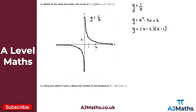If I sketch this quadratic, it's going to look like a standard upward-opening parabola passing through x equals 1, x equals 2, and the y-intercept at 2. So this curve here is y equals x squared minus 3x plus 2. That's our solution to part A — a sketch on the same axes of y equals 1 over x and y equals x squared minus 3x plus 2.